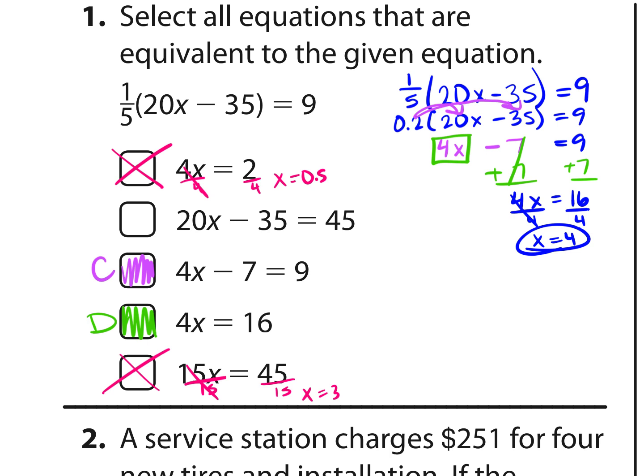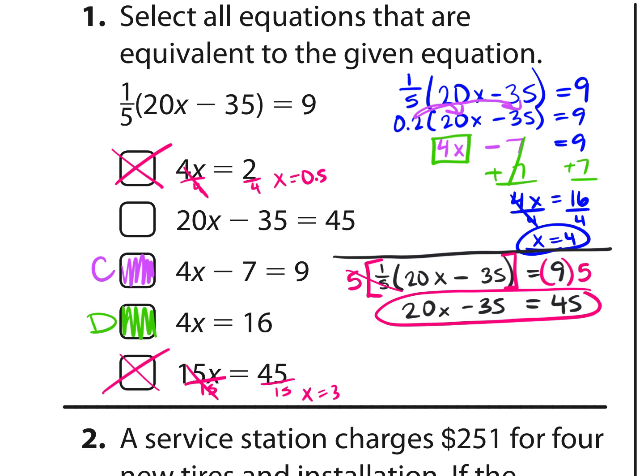Now looking at this choice B, I noticed something and you could just solve the equation for x and see if you get x is 4. But what I want to notice is that if I go ahead and stay with one-fifth times 20x minus 35 in the parenthesis equal to 9, I could get rid of my fraction one-fifth by multiplying by its reciprocal. Well, its reciprocal is 5. 5 over 1, which is just 5. And I multiply both sides by 5. So I'm keeping this equivalent by doing the same thing to the left and right side. One-fifth times 5 will cancel out, and we get 20x minus 35 on the left side. And then 9 times 5 is 45. Notice that this is answer choice B.